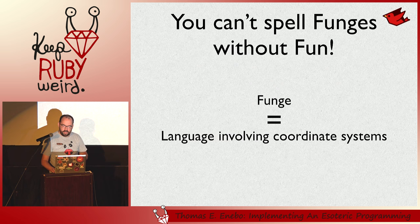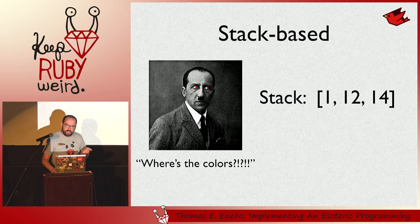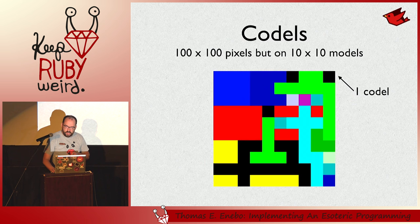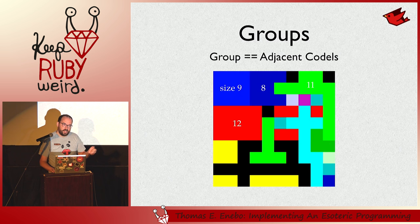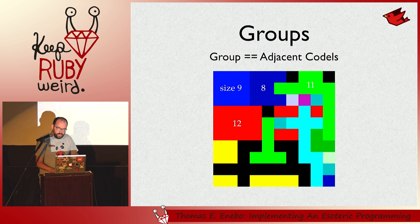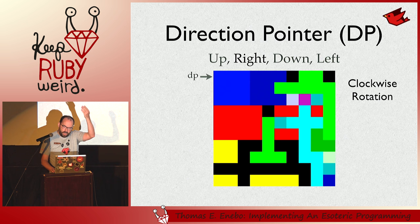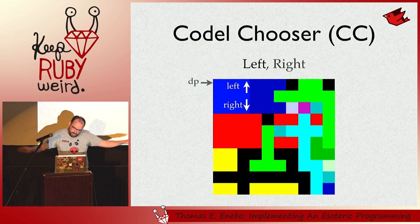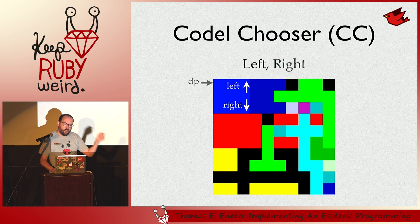It's stack-based. Most of the esoteric languages are based on stacks and being very primitive machines. It's based on codels — codels are just an n-by-n pixel square. Codels make up groups. In the upper left-hand corner, we have a three-by-three group that's size nine. Next to it is the dark blue group and it's eight because green is taking a little chunk out of it. There's some runtime state called a direction pointer — it initially points right and moves around clockwise. There's a codel chooser, which is either left or right. Execution of Piet is moving from one group to the next group.